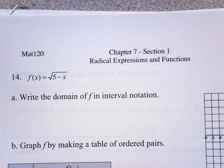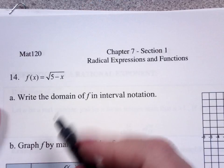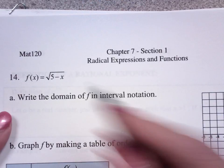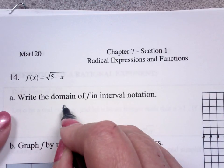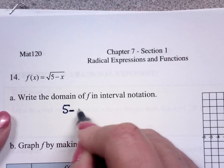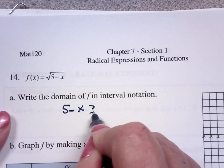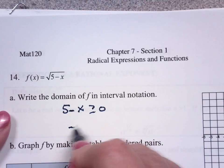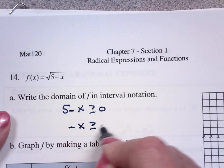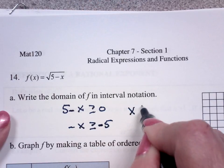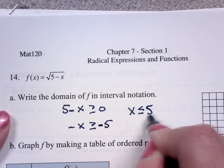Because remember that I can't put x values in to make the radicand negative. So essentially, the first thing I'm going to look for is the domain. It's even indexed, so 5 minus x has to be greater than or equal to 0. Minus x has to be greater than or equal to minus 5, or x is less than or equal to positive 5.